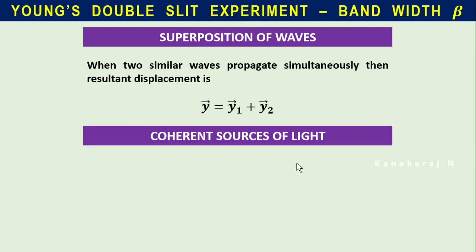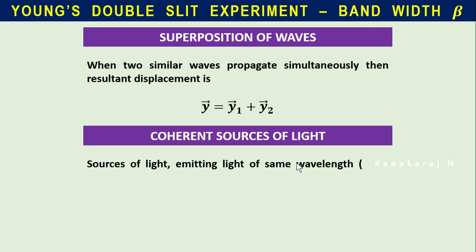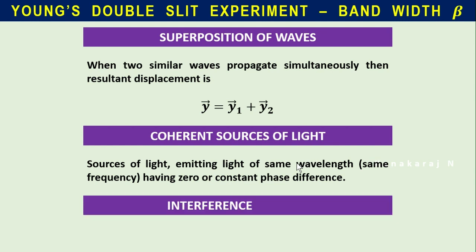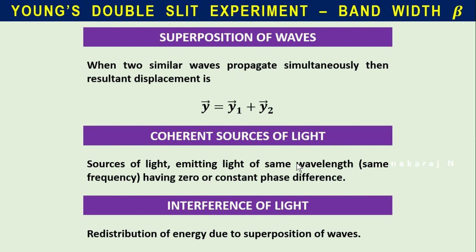Coherent sources of light: sources of light emitting light of the same wavelength — and of course the same frequency — having zero or constant phase difference are called coherent sources of light. Interference of light: the redistribution of energy due to superposition of waves is called interference of light. That covers superposition of waves, coherent sources of light, and interference of light.